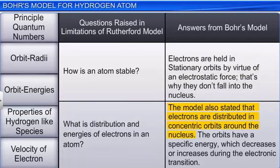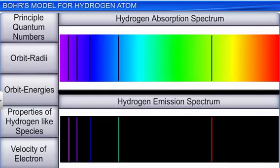The orbits have a specific energy which decreases or increases during the electronic transition. In addition, it helps to quantitatively explain the emission and absorption line spectrums of hydrogen and hydrogen-like species. Let's see how.